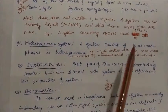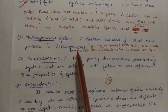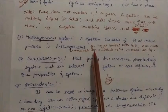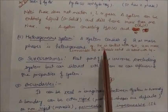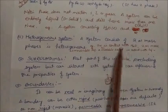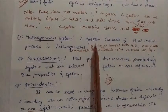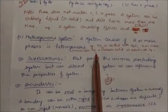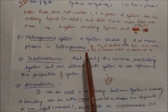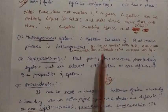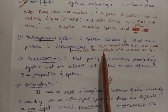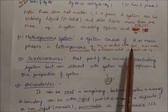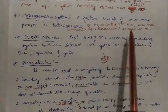A heterogeneous system consists of two or more phases. Examples include ice in contact with water — one phase is ice, one is water, and they are not uniformly distributed. Other examples are two immiscible liquids like kerosene and water, or an insoluble solid in contact with a liquid, or chalk with water. All of these are called heterogeneous systems.